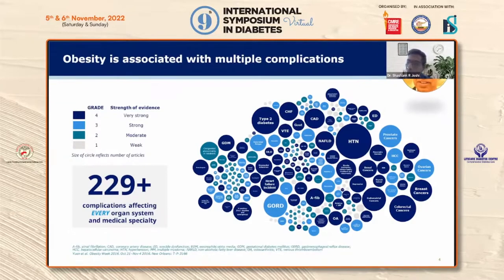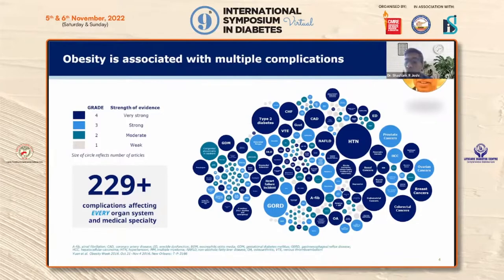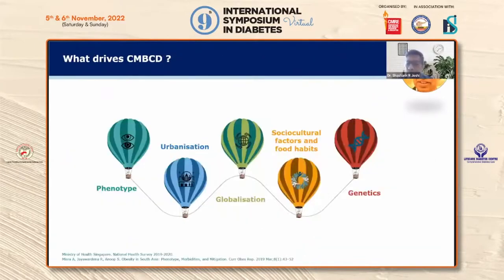These complications span de novo type 2 diabetes, hypertension, coronary artery disease, cardiac failure, fatty liver, venous thromboembolism, gout, stroke, depression, endometrial cancers, breast cancers, colorectal cancers, atrial fibrillation, incident heart failure, C-sections, osteoarthritis, GERD, congenital anomalies, and renal cancer, among others.